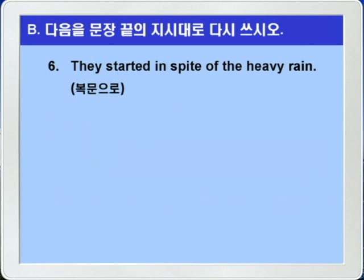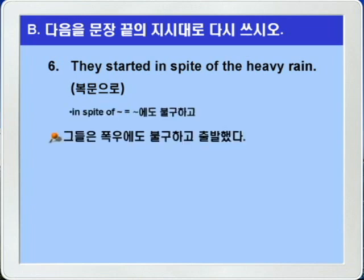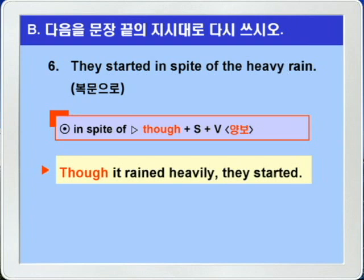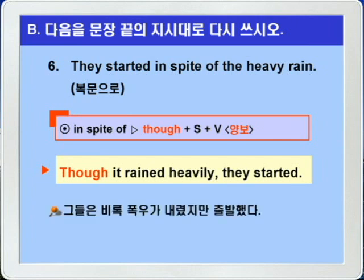6번입니다. They started in spite of the heavy rain. 'in spite of'는 '뭐뭐에도 불구하고'라는 뜻이니까, 그들은 폭우에도 불구하고 출발했다. 복문으로 바꾸려면 양보의 종속 접속사 'though'를 써서 종속절과 주절을 만들면 됩니다. 비록 폭우가 내렸지만 그들은 출발했다. 정답: Though it rained heavily, they started.